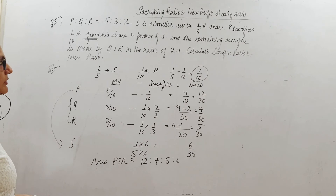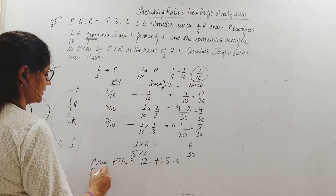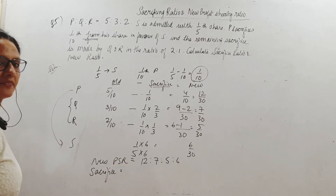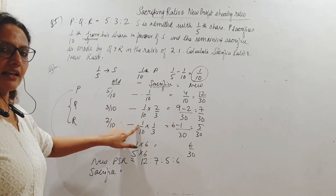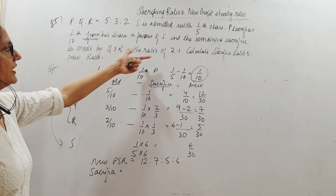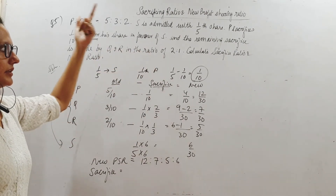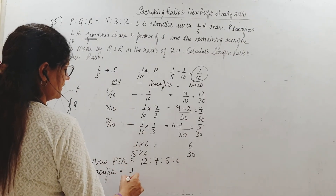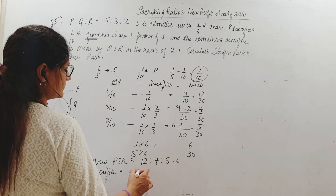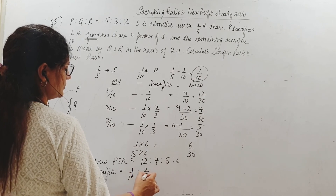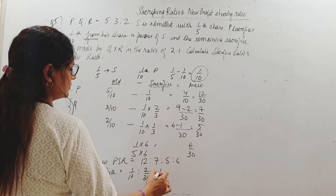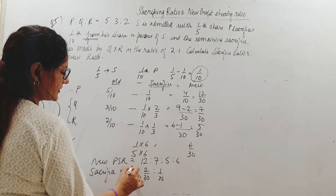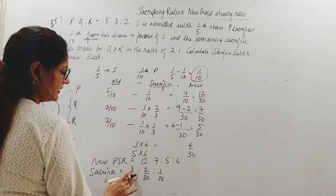What about the sacrificing ratio? Three people are sacrificing. P sacrifices 1/10 equals 3 by 30. Q sacrifices 2 by 30 and R sacrifices 1 by 30. So the sacrificing ratio of P, Q and R is 3 is to 2 is to 1.